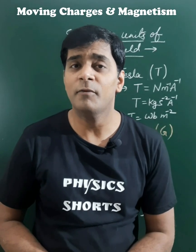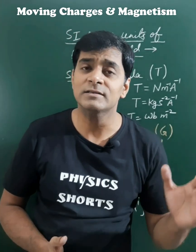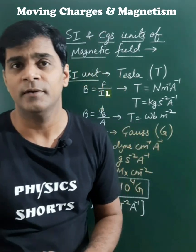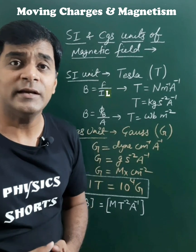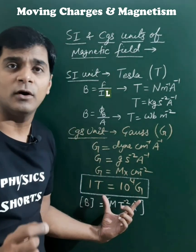Tesla is the SI unit of magnetic field while Gauss is the CGS unit, and 1 Tesla is equal to 10 to the power 4 Gauss.